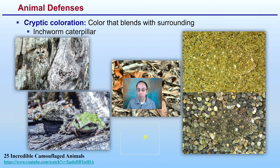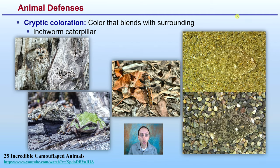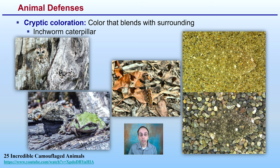We also have other animal defenses such as cryptic coloration, where a color blends into the surroundings. We have the inchworm caterpillar, owls, different frog colors, and the flounder on the bottom, which can easily blend into fine sand or coarser gravelly substrate. This helps reduce the odds of predators finding and consuming them.